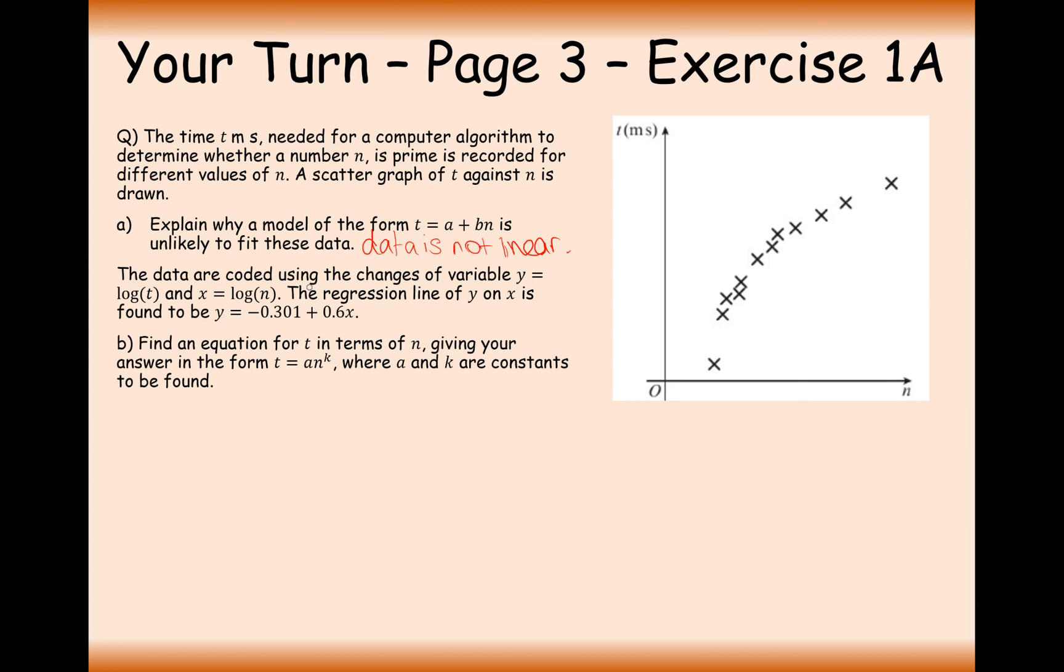Next question. The data is recorded using the change of variables y equals log t and x equals log n. The regression line of y on x is found to be y equals minus 0.301 plus 0.6x. Find an equation for t in terms of n, giving your answer in the form t equals an to the power of k, where a and k are constants to be found. So it's the other type of data that we were working with in the example beforehand. What we do is pretty much exactly the same.